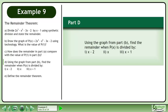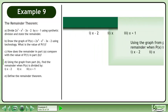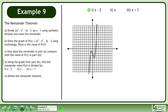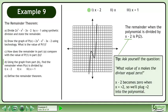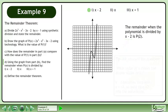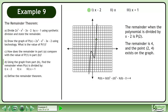Now we'll move on to Part D. Using the graph from Part B, find the remainder when p is divided by x minus 1, x minus 2, and x minus 3. Let's bring up the graph we found in Part B. The remainder when the polynomial is divided by x minus 2 is p at 2. Ask yourself: what value of x makes the divisor equal 0? x minus 2 becomes 0 when x equals positive 2, so we'll plug positive 2 into the polynomial. The remainder is 4 and the point exists on the graph.